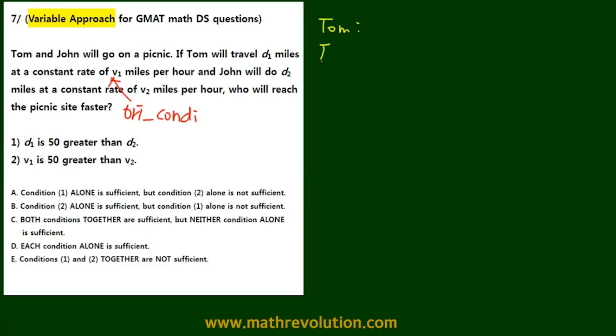There's Tom and John. For Tom, we'll have v1 times t1 equals d1, and for John, we have v2 times t2 equals d2.